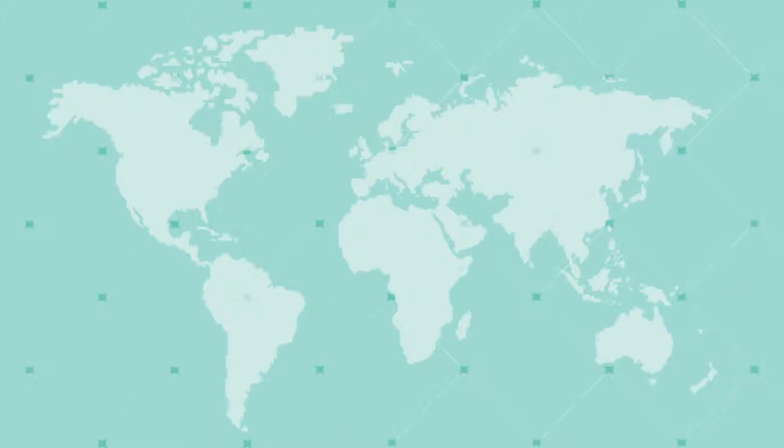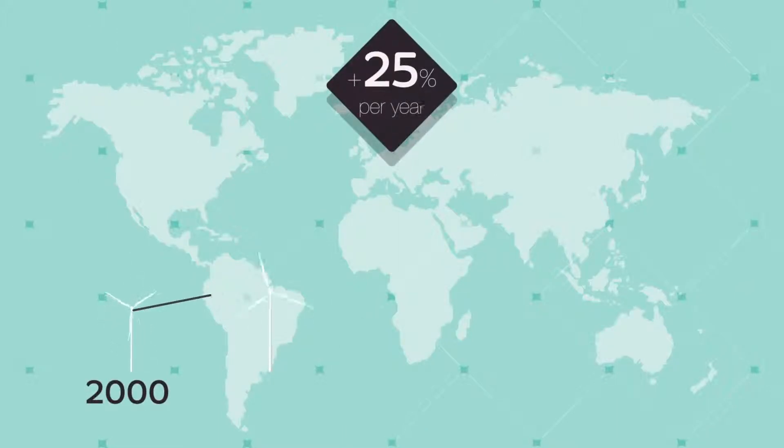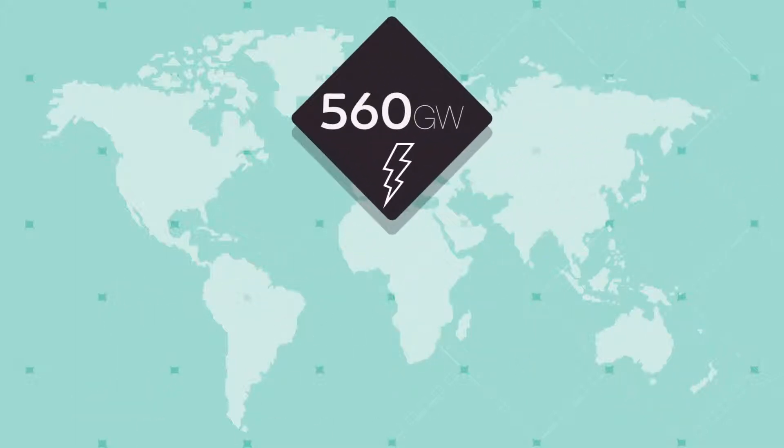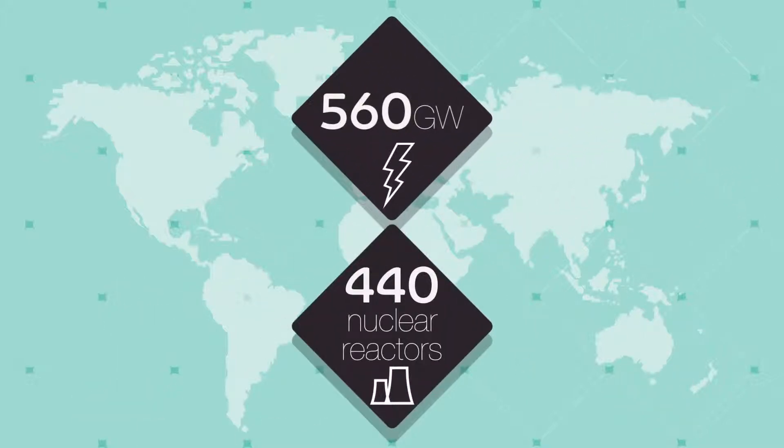Worldwide installed wind capacity has grown an average 25% a year since 2000, reaching 560 gigawatts in 2017. That's equivalent to the amount of energy produced by 440 nuclear reactors.